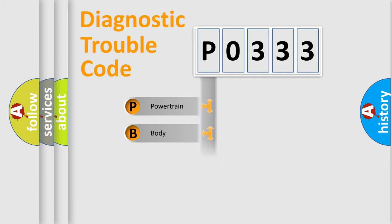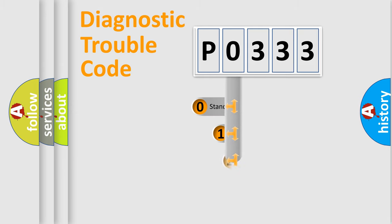Powertrain, body, chassis, network. This distribution is defined in the first character code.